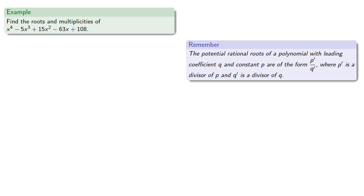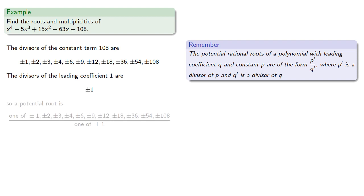So we can find the divisors of the constant term 108 and the divisors of the leading coefficient, and so a potential root is one of these divisors of 108 divided by one of the divisors of 1.